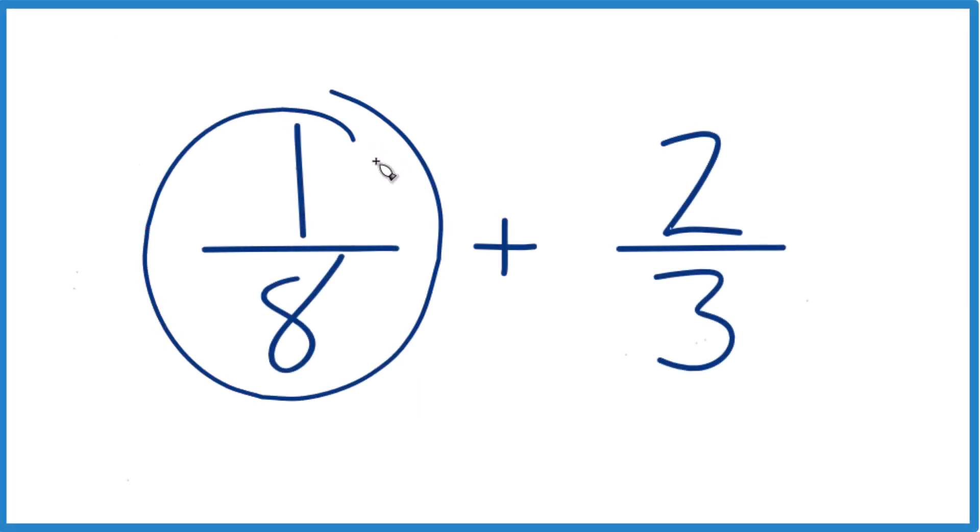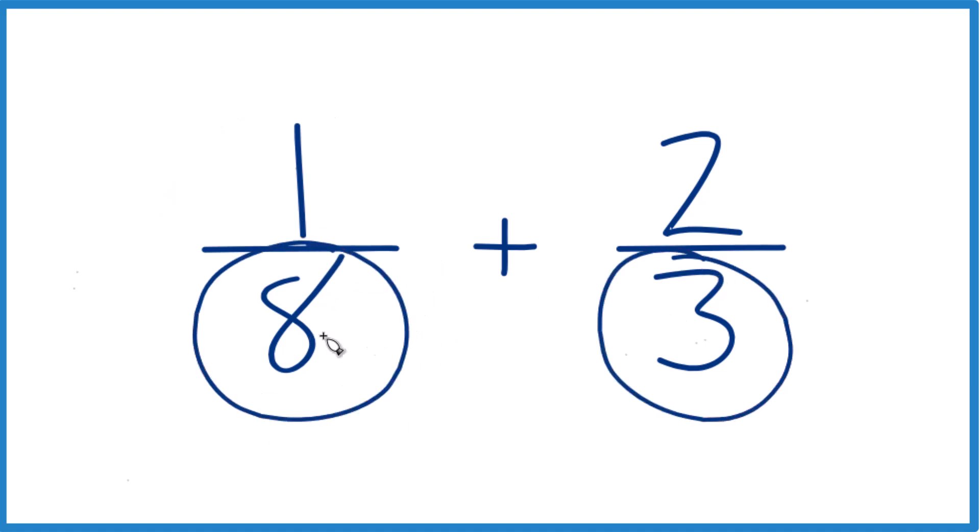Here's how you add the fractions 1 eighth plus 2 thirds. What we want to do is get a common denominator. Right now we have 8 and 3, but if these were the same,